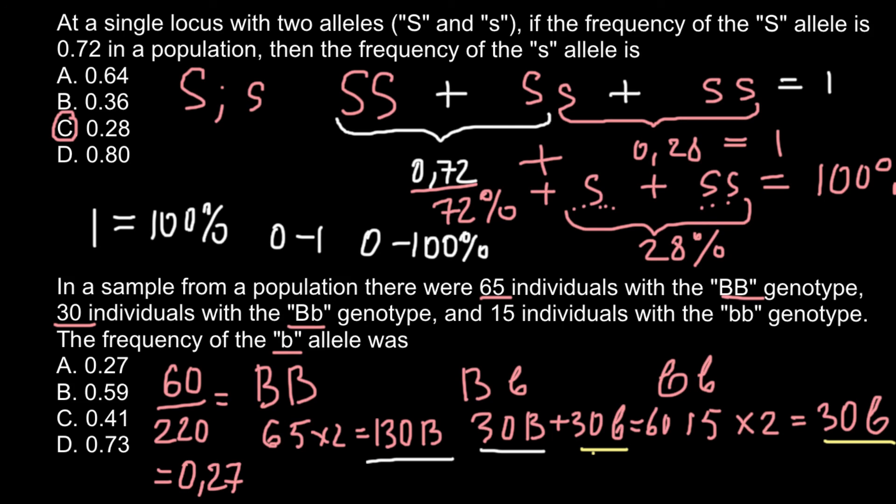And if we need to give the answer as a percentage, we can say this is 27% — just multiply by 100. But since our answer is on the scale between 0 and 1, the correct answer is A: 0.27. That's all for today. Thank you for your attention. Please subscribe for my new videos that I post almost every day. Thumbs up if you like this video. Goodbye.